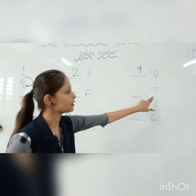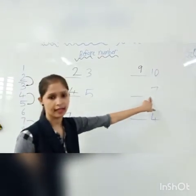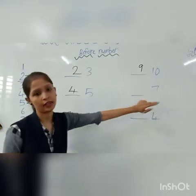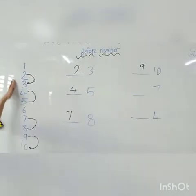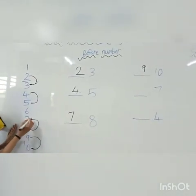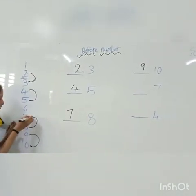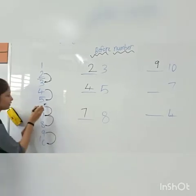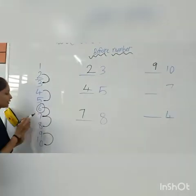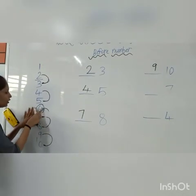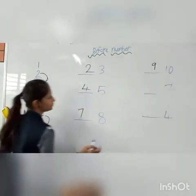This is 7. Here is 7. What comes before 7? The answer is 6. 6 comes before 7.